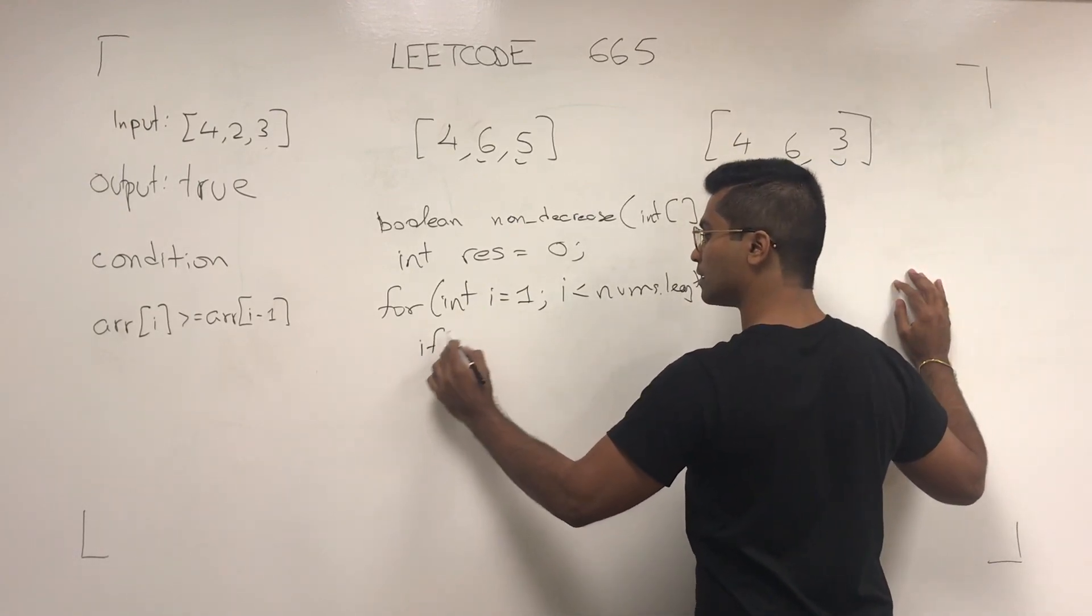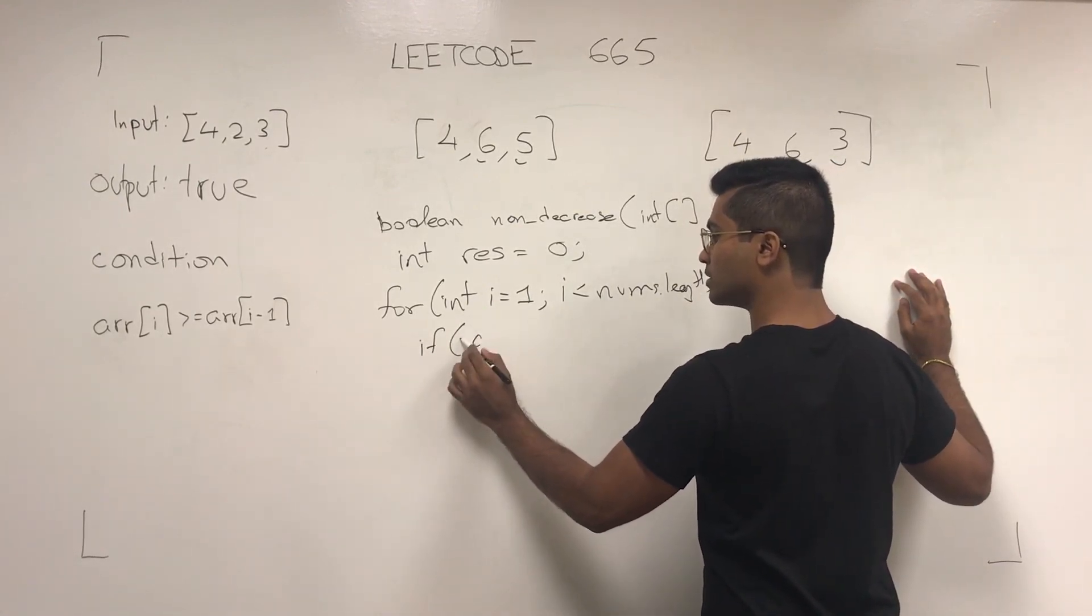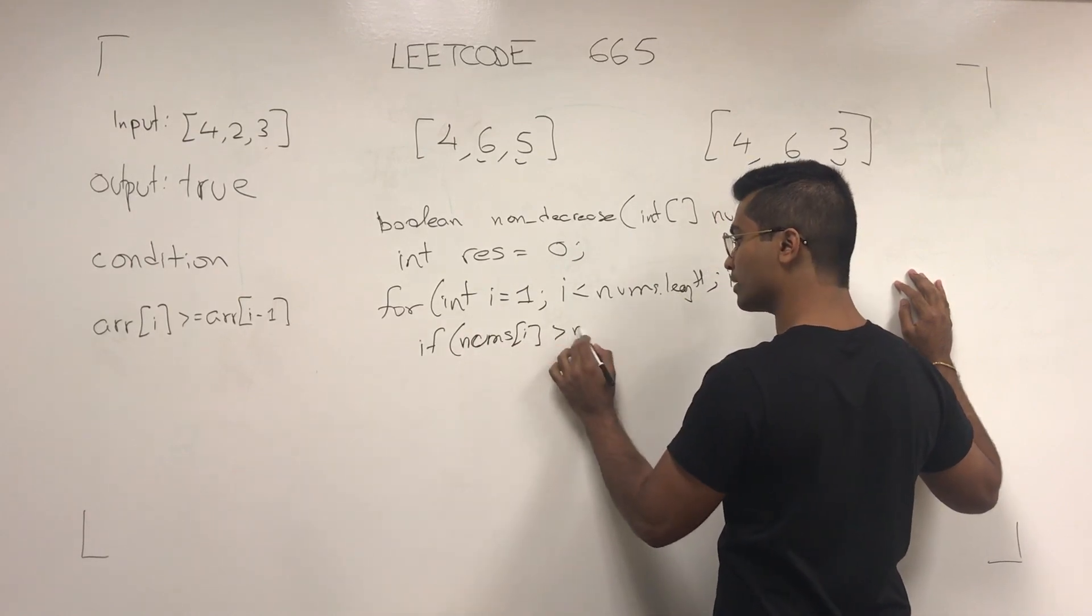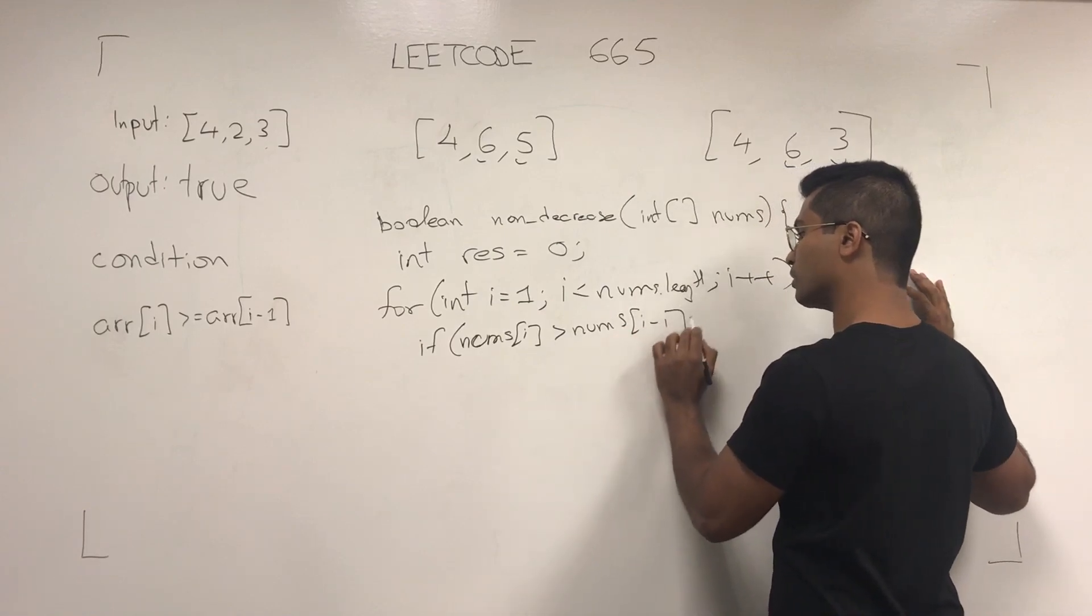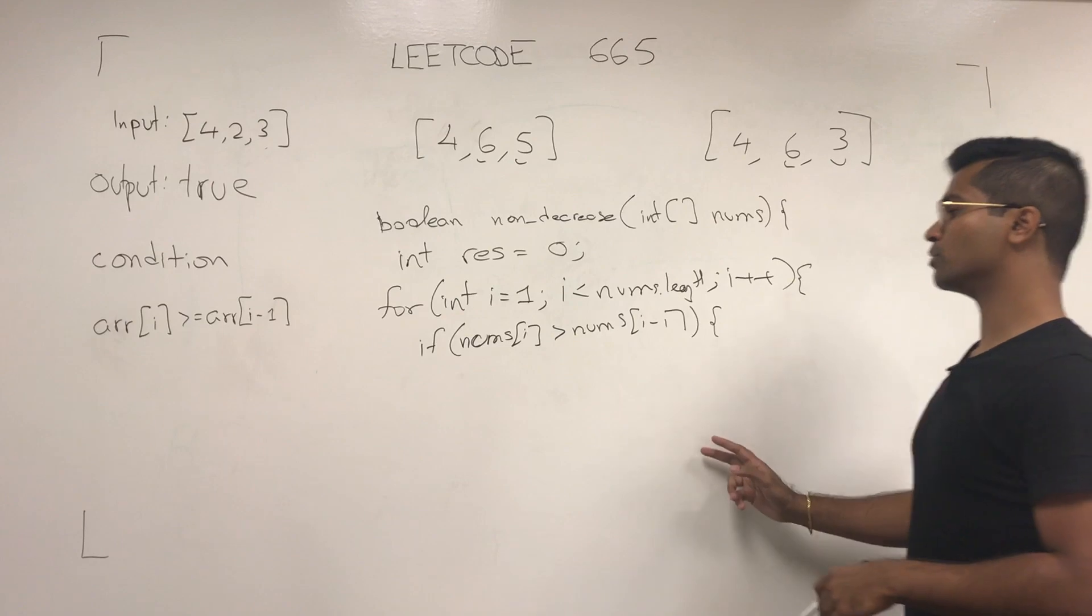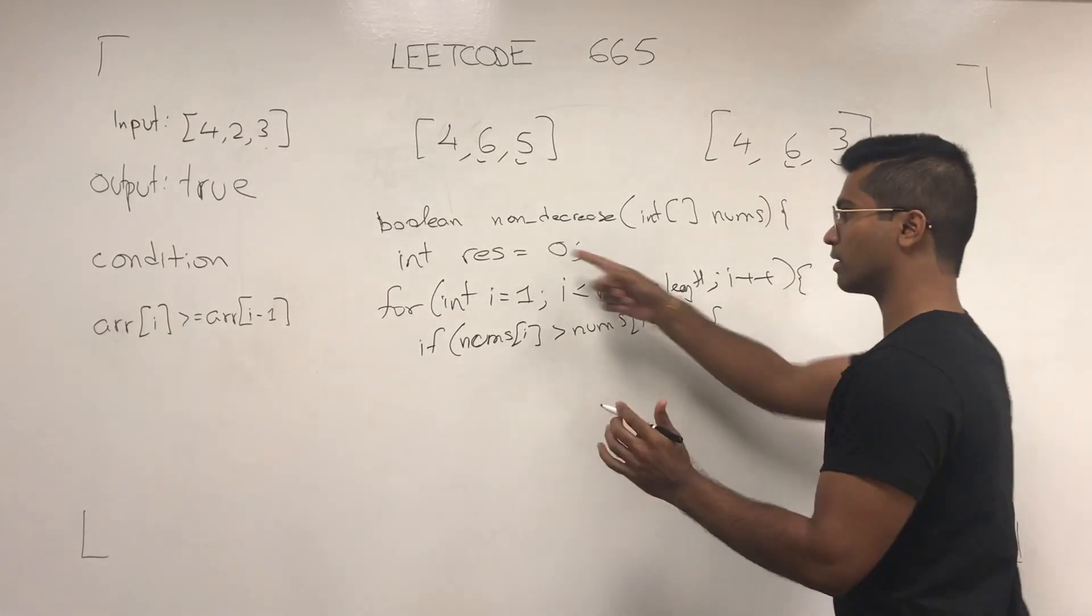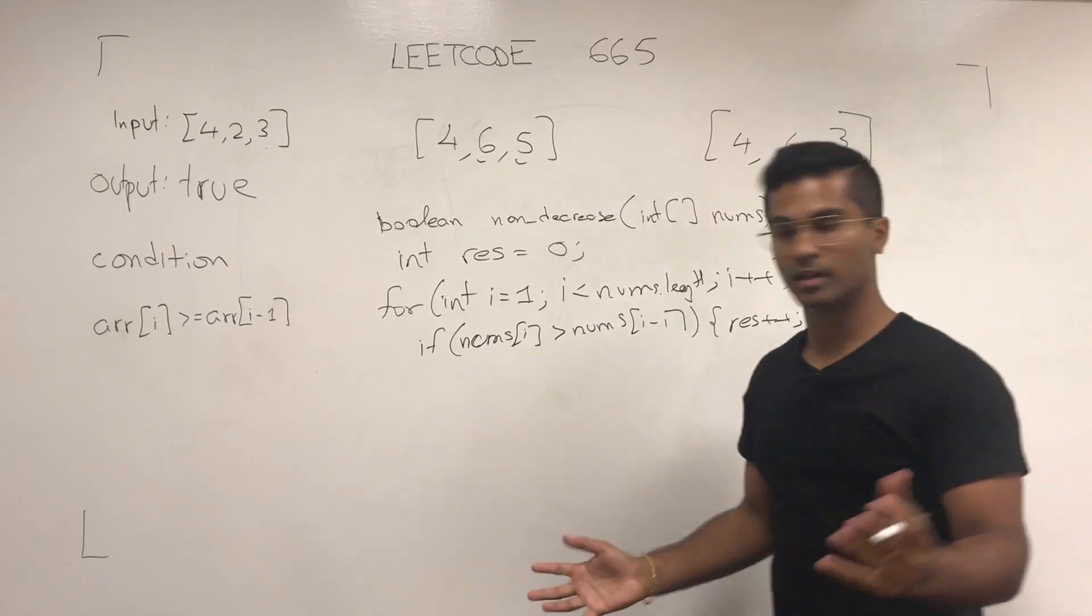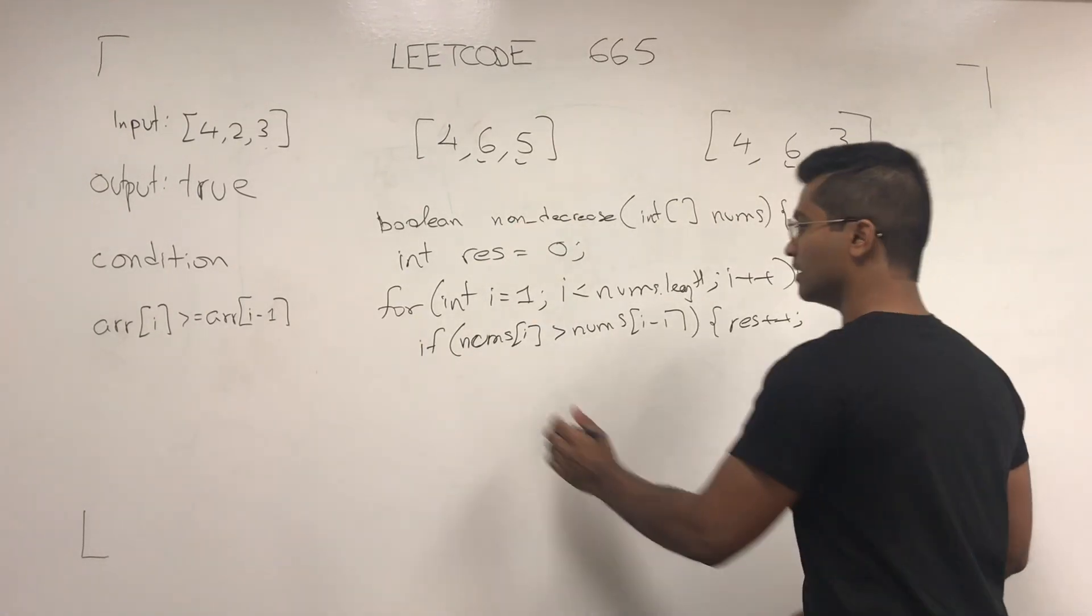Now if nums of i is greater than nums of i-1, what we're going to do is we're going to check first increment result. Because we know we have to do a modification. Now which one we're going to modify, let's get into that.